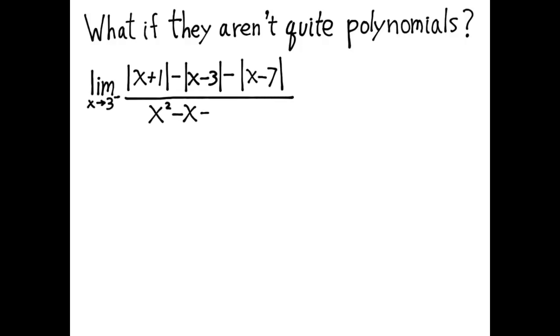Like the limit as x approaches 3 from the left of absolute value of x plus 1 minus absolute value of x minus 3 minus absolute value of x minus 7 over x squared minus x minus 6. Students often don't know what to do with the absolute values. So I'm giving you an example that's just loaded with absolute value expressions to show you what to do. It's not that difficult.